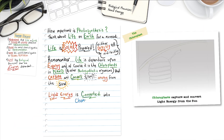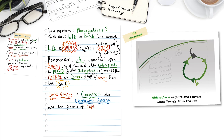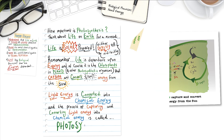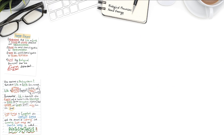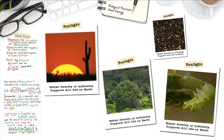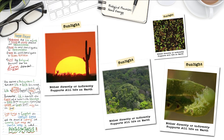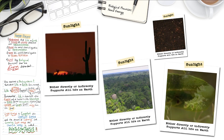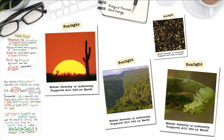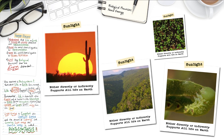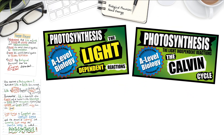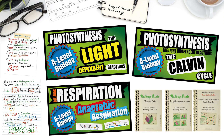Light energy is converted into chemical energy, and the process of capturing and converting light energy into chemical energy is called photosynthesis. So either directly or indirectly, the process of photosynthesis sustains life on earth. We've established that life needs energy, and the primary source of that energy is through photosynthesis. And of course, cells are also able to release energy from glucose through cellular respiration.